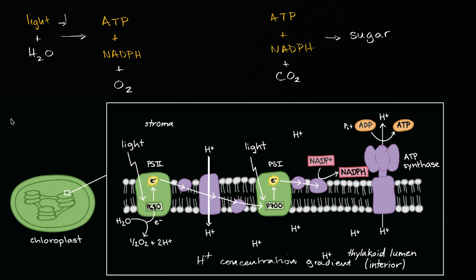Now the electrons going from a high energy state to a lower energy state in this part of the light-dependent reactions, that by itself isn't the only thing that is contributing to the hydrogen ion concentration gradient. Once that electron gets donated, you might say, well how does it get replaced?